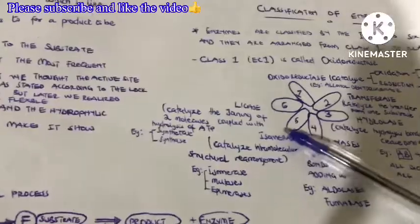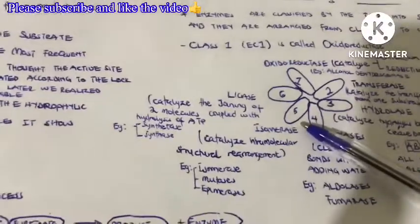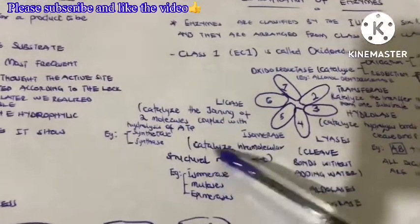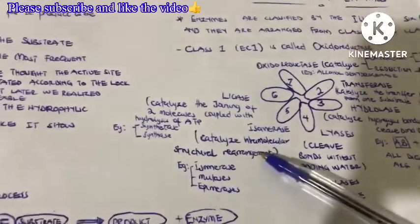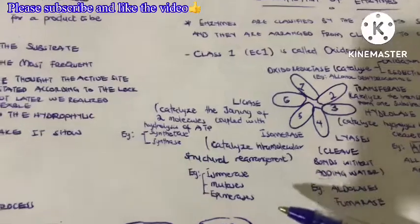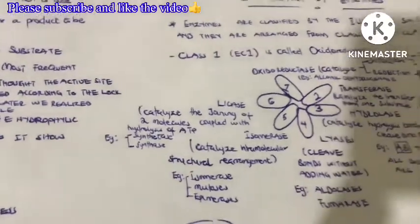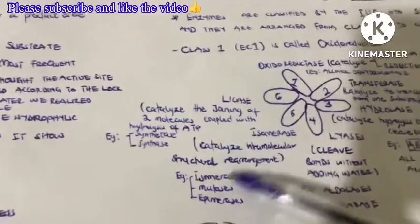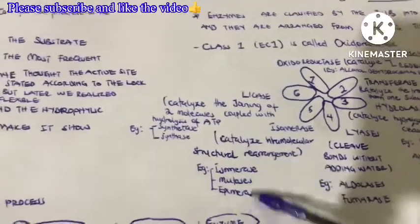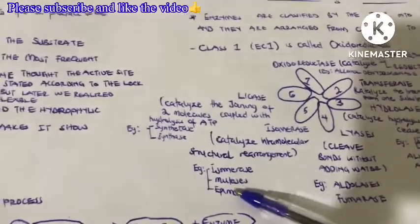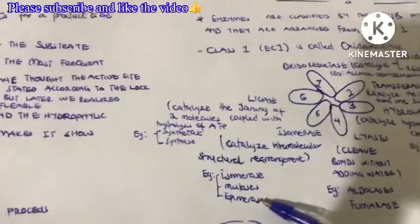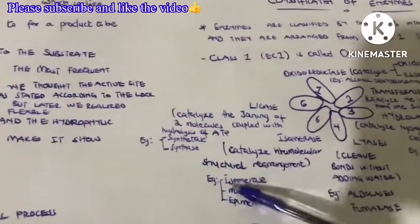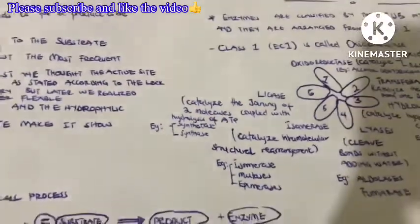The fifth class is called isomerases. They catalyze intramolecular structural rearrangement. For example, glucose can be converted to fructose because of an intramolecular structural rearrangement. Examples of such enzymes include mutases and epimerases, and sometimes these enzymes end with the name 'isomerase.'